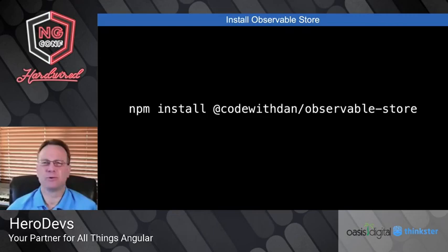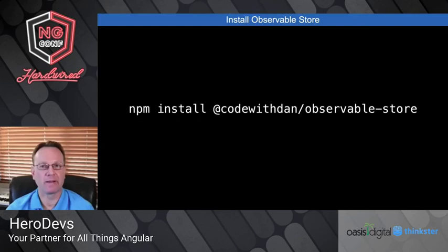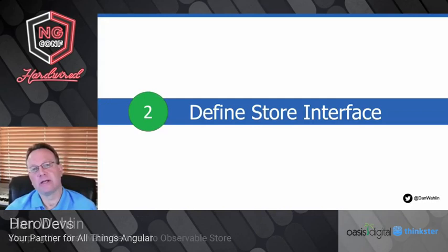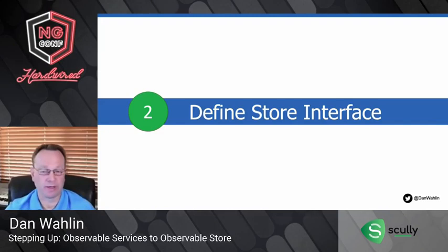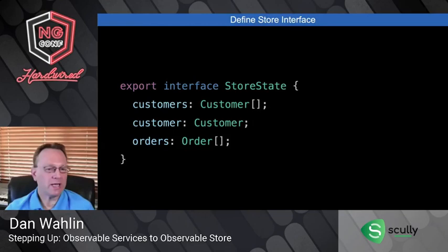Once you've installed it — and it's tiny, I think it's less than 250 lines of code; most of the functionality is coming from RxJS so it's really wrapping a lot of that and just exposing a simple API — the next thing you'll do, if you're using TypeScript, is define interfaces. This is optional because you can use this with React, Vue, or anything else, but if you're using TypeScript we have support for interfaces.